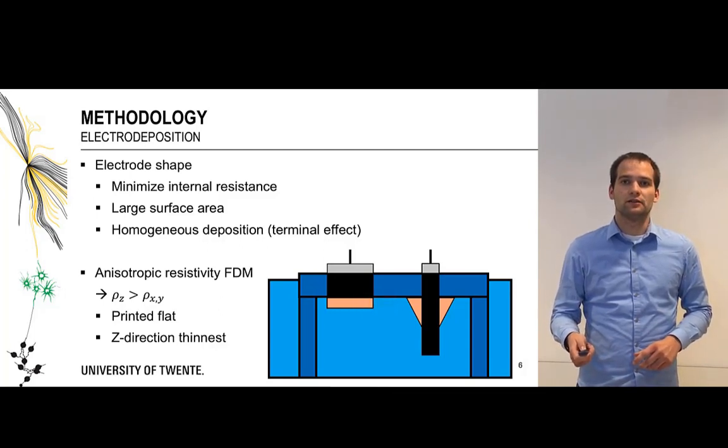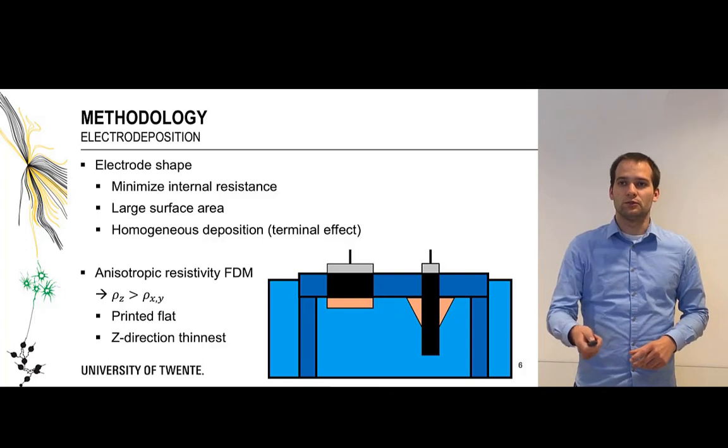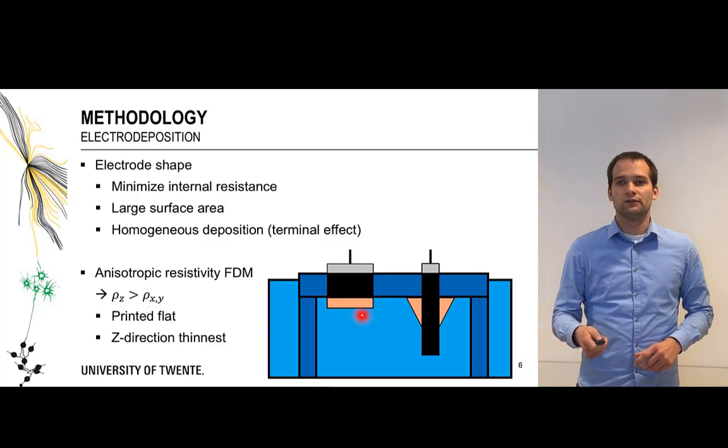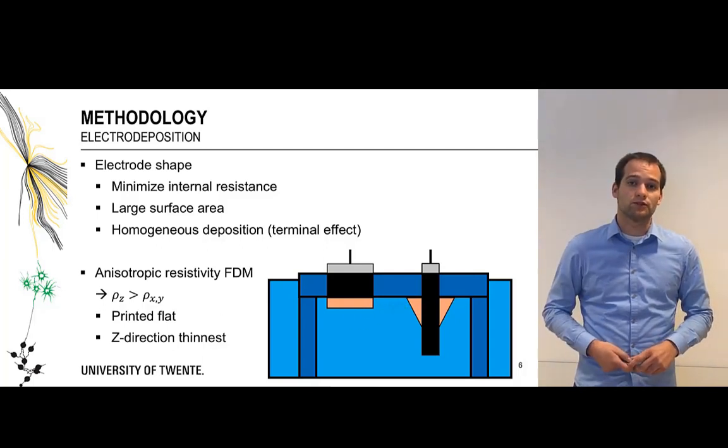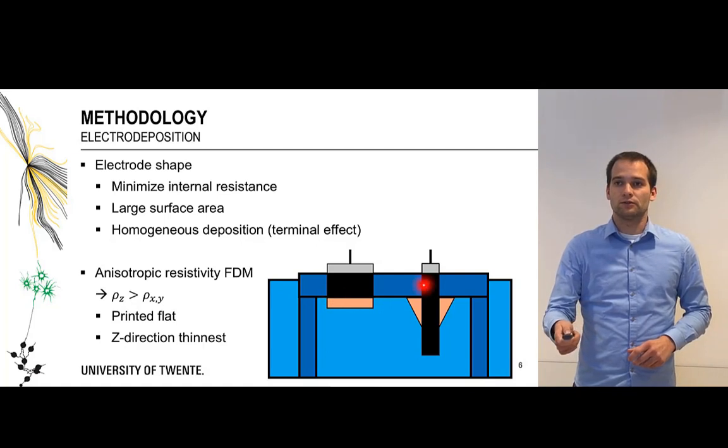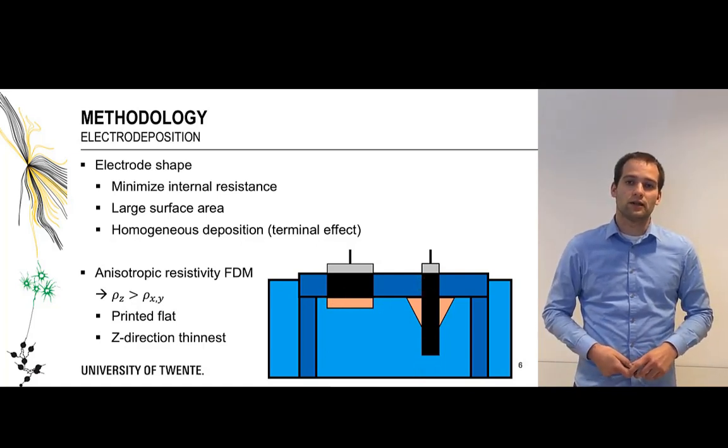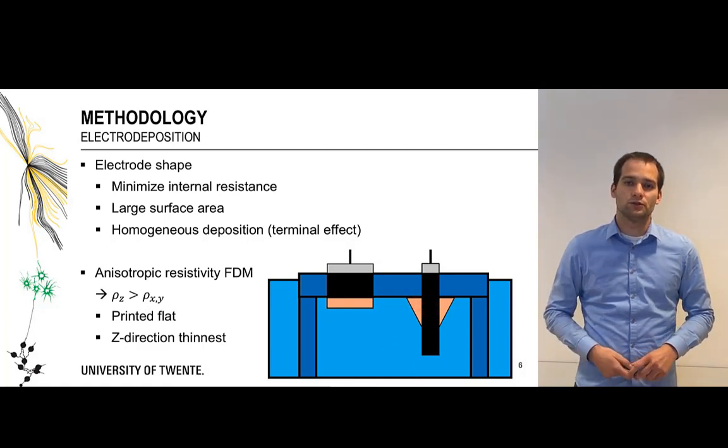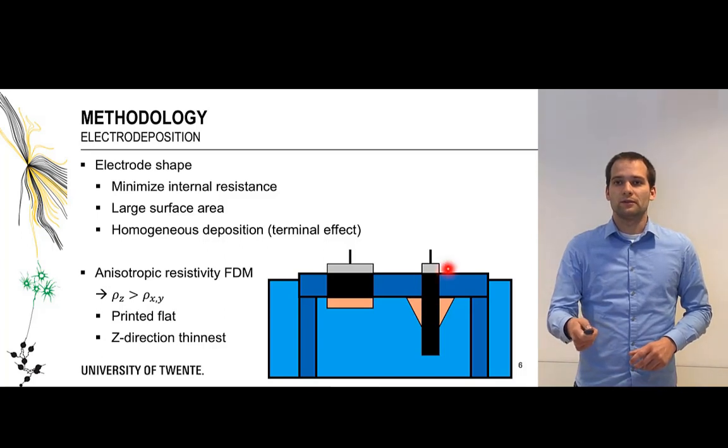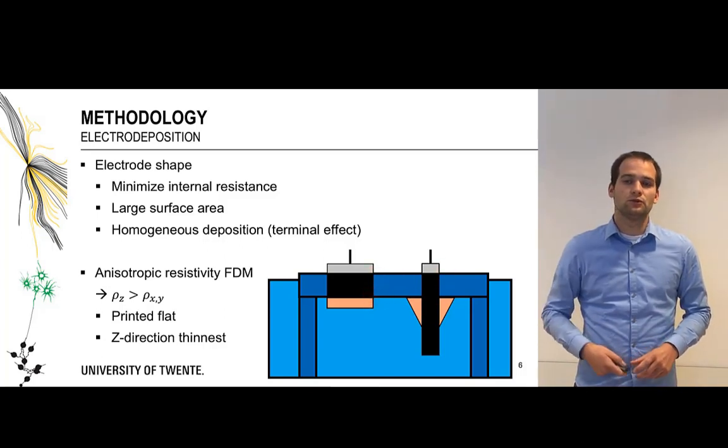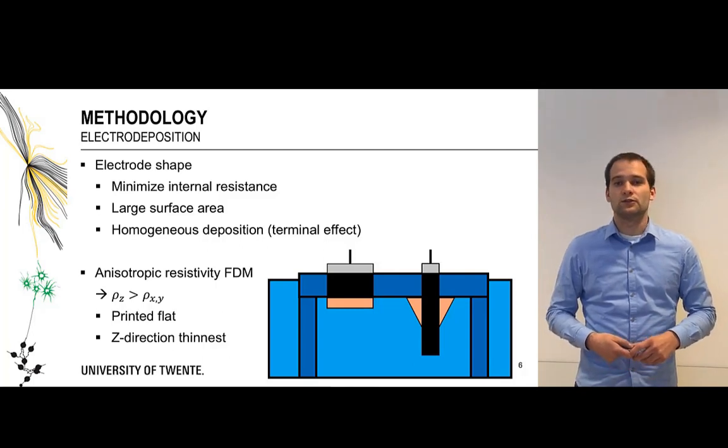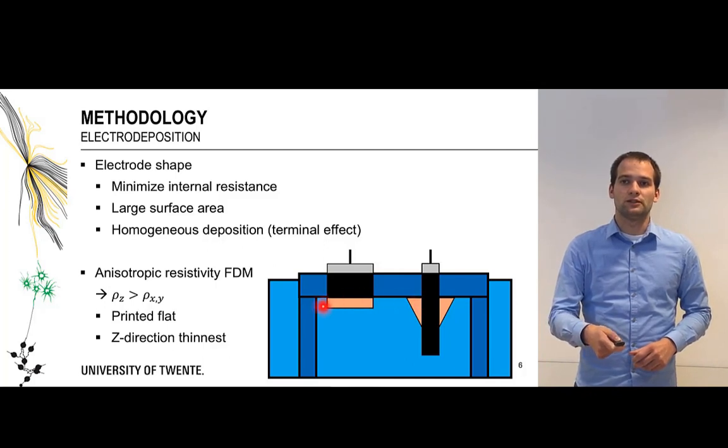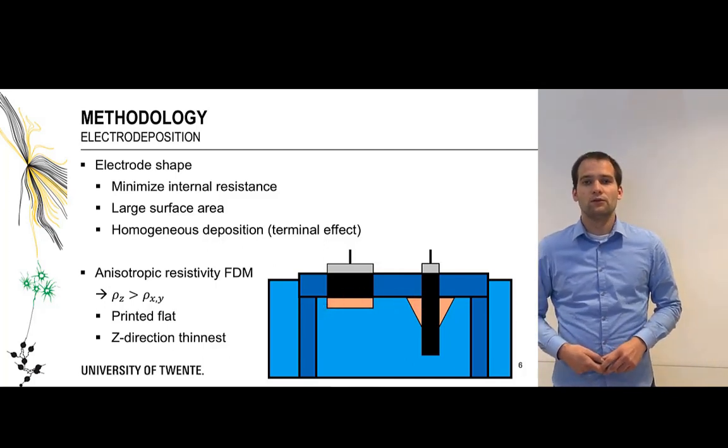The third and most important reason is to achieve homogeneous deposition which is difficult because of the terminal effect. If you take a highly resistive rod put into your electrolyte for electrodeposition, most of the metal is deposited closest to your current collectors. Since we have taken flat plates the distance from current collector to the metal surface is approximately the same everywhere so the resistance is approximately the same everywhere and we can achieve more homogeneous distribution of our metal.